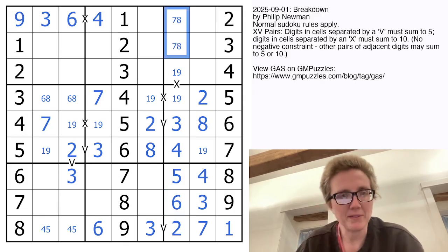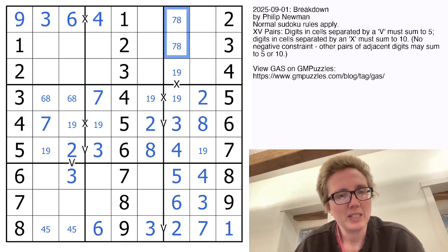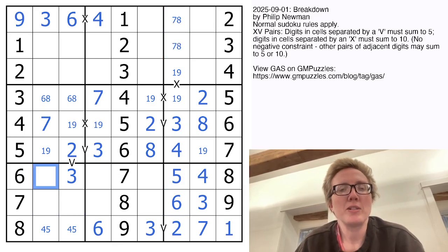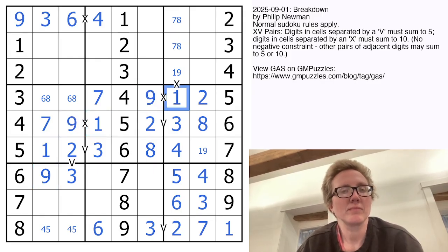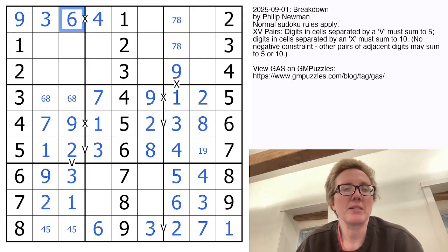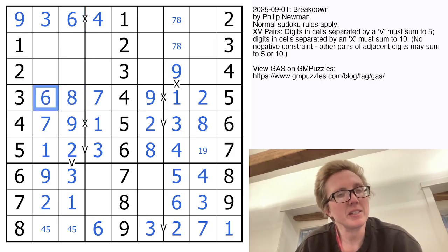I need a 7 and an 8 to finish off this column. I need a 1, 2, and a 9 in this region. The 9 can only go there, which resolves this. And so my 1 and 2 have to go there and there. The 6 I placed earlier is going to give me an 8 right there and a 6.